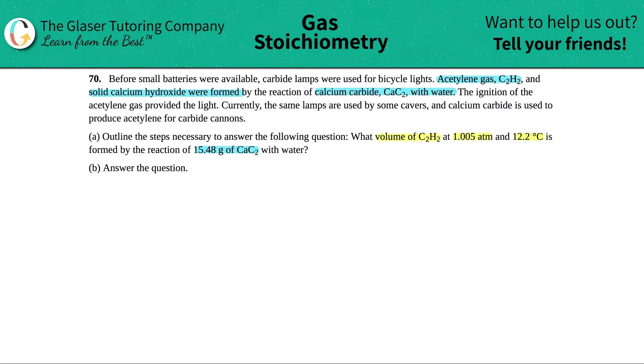They tell us that acetylene gas C2H2 and solid calcium hydroxide were formed. So these are the products by the reaction of calcium carbide CaC2 with water. So it looks like these two are coming together to form acetylene gas and calcium hydroxide. Calcium carbide CaC2 plus water is coming together to form acetylene gas C2H2 and calcium hydroxide.